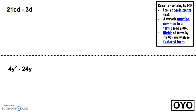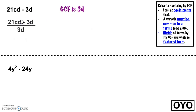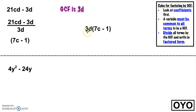Here we see 21cd minus 3d. Look at the coefficients first — we see we have a 3 in common. Now look at the variables: this time we have d in common. So this time my GCF is going to contain a variable — I'm going to be dividing out 3d from this expression. 21cd divided by 3d gives me 7c. Negative 3d divided by 3d gives me negative 1. So the factored form is 3d times 7c minus 1.